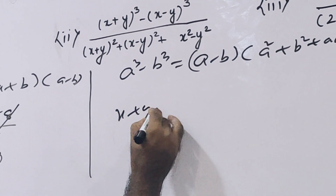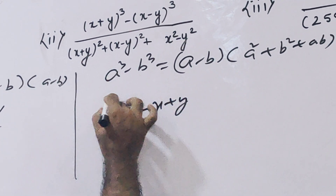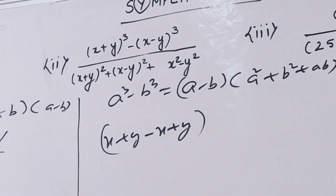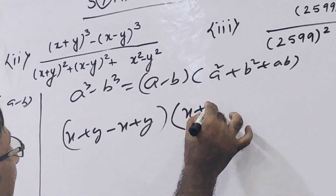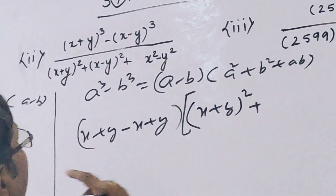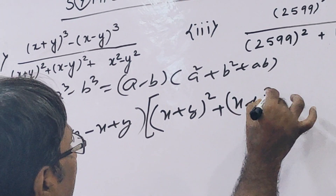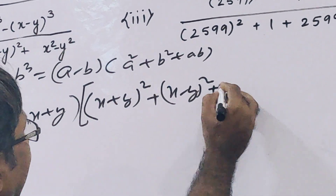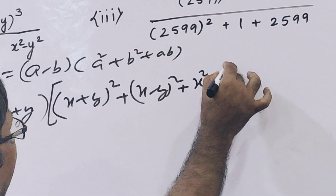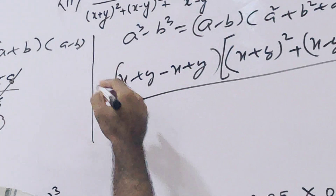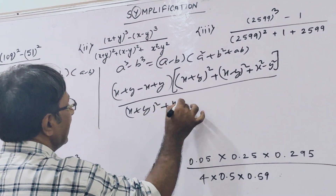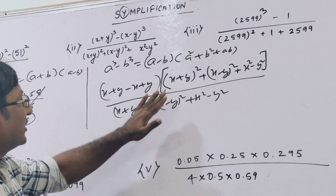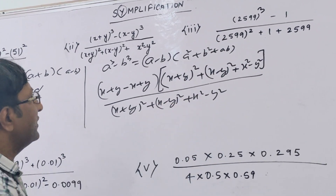So a minus b is: (x+y) minus (x-y), which gives 2y. Then a squared is (x+y) squared, plus b squared that is (x-y) squared, plus ab which gives x squared minus y squared. Now the denominator is (x+y) whole square plus (x-y) whole square plus x squared minus y squared — these all cancel out.